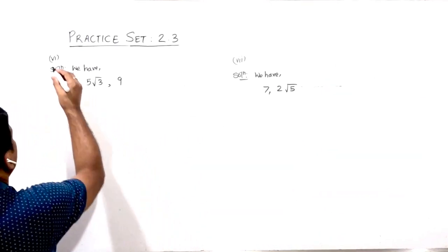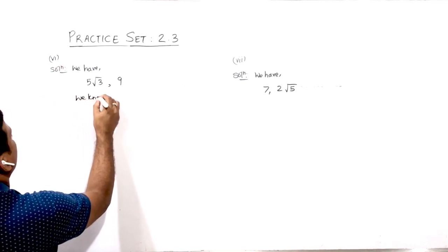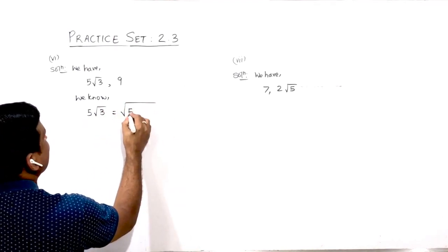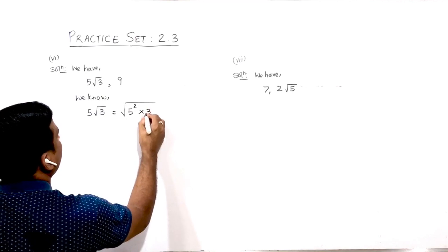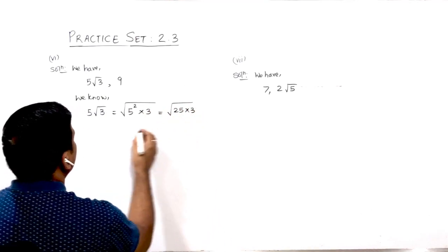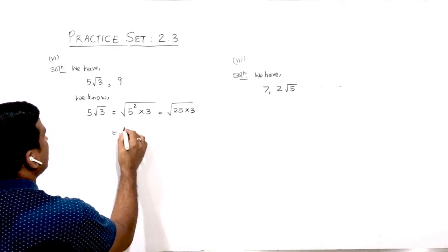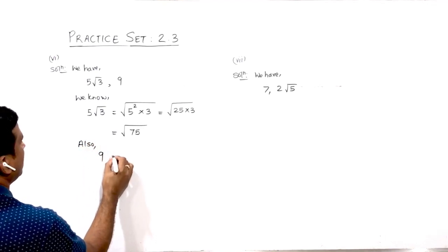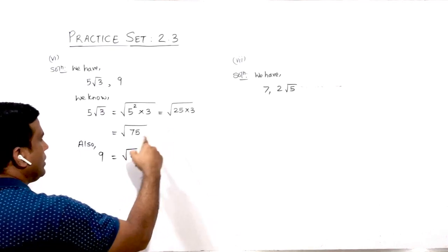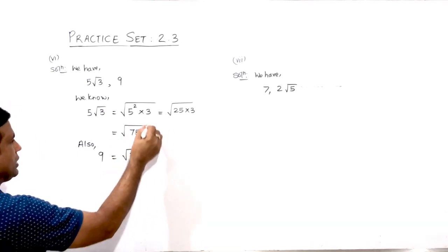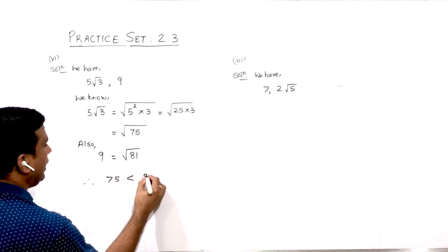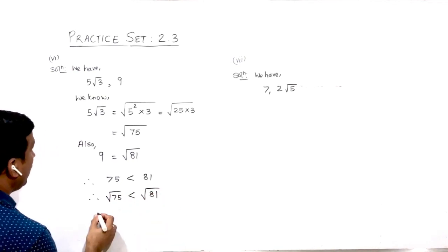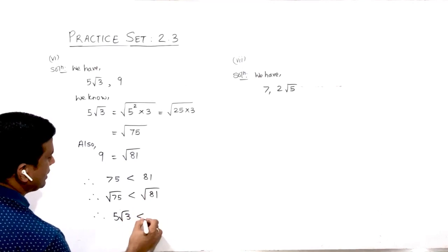Similarly, for sum number 6: 5√3 can be written as √(5² × 3) = √(25 × 3) = √75. Also, 9 can be written as √81. Since both are now in surd form, 75 is less than 81, therefore √75 is less than √81, so 5√3 is less than 9.